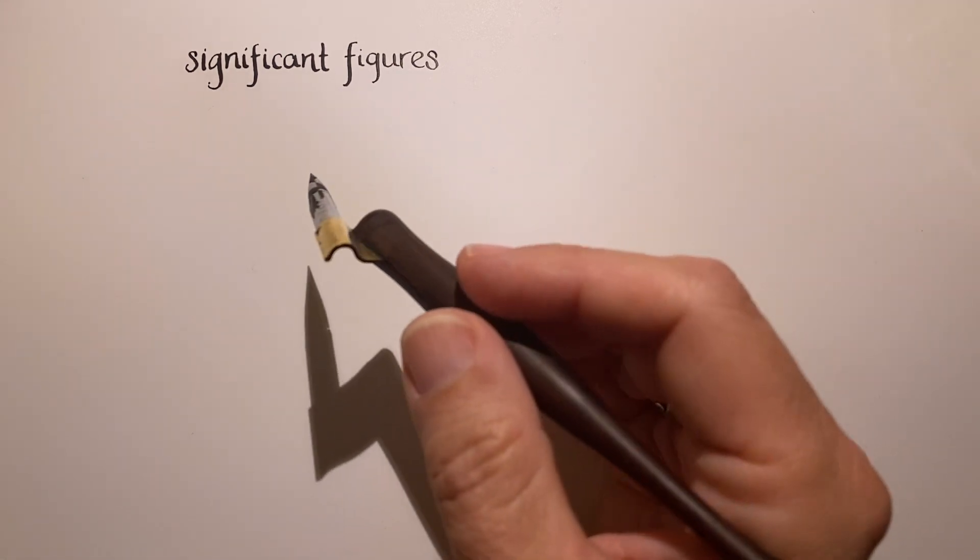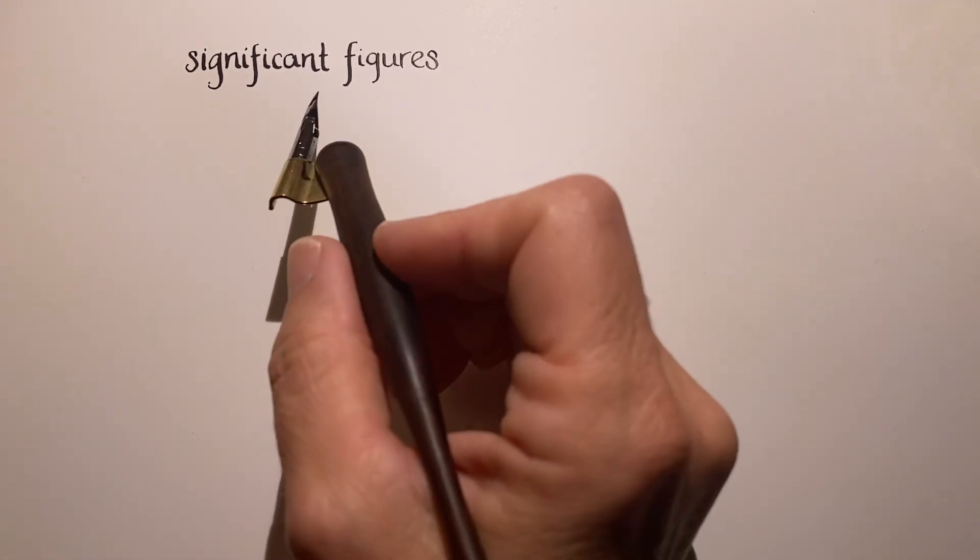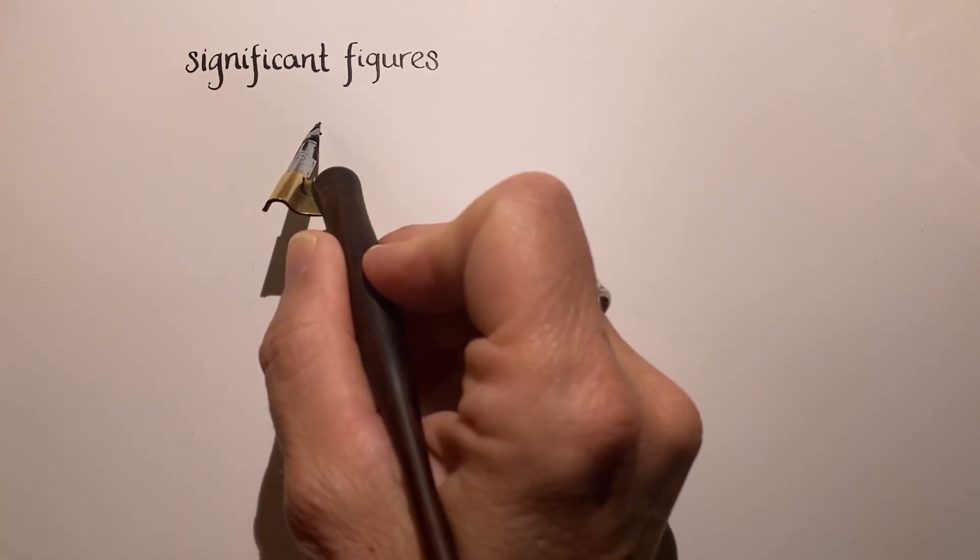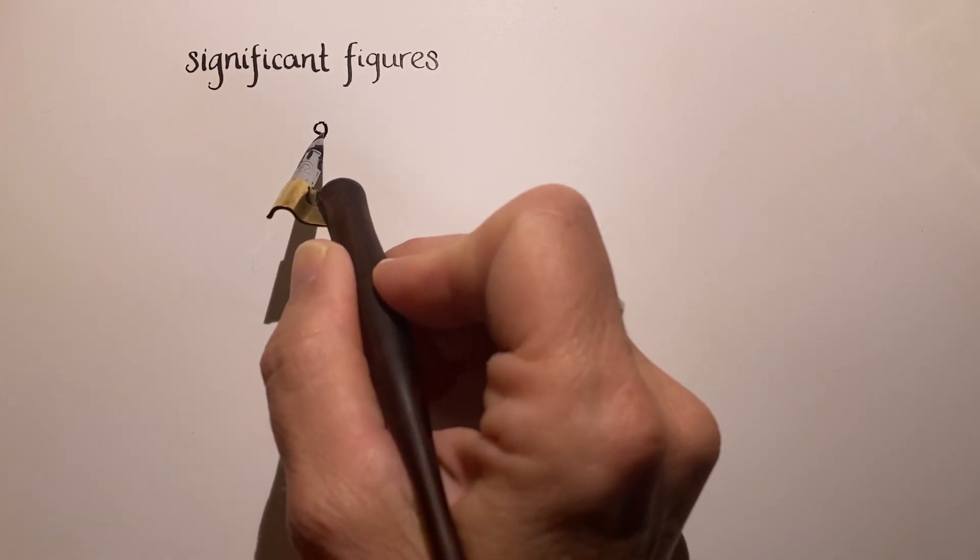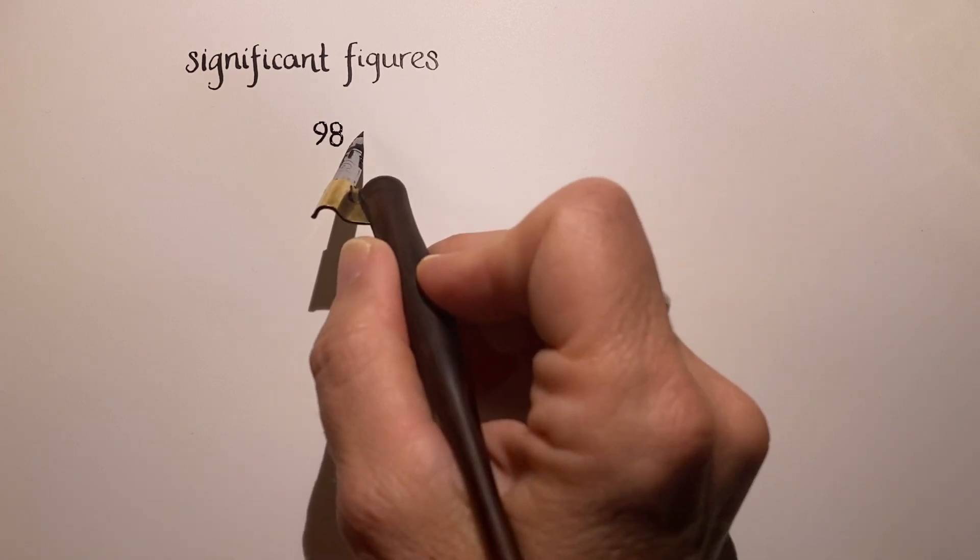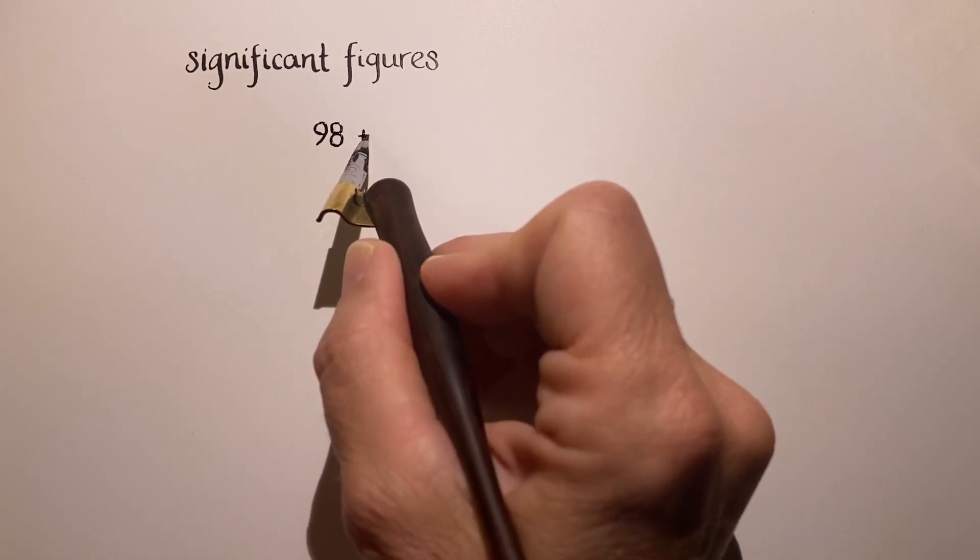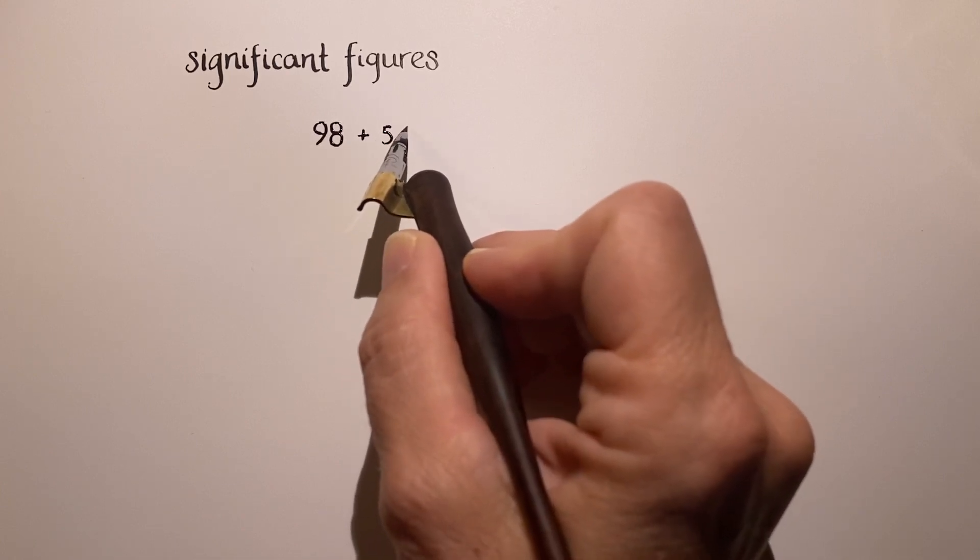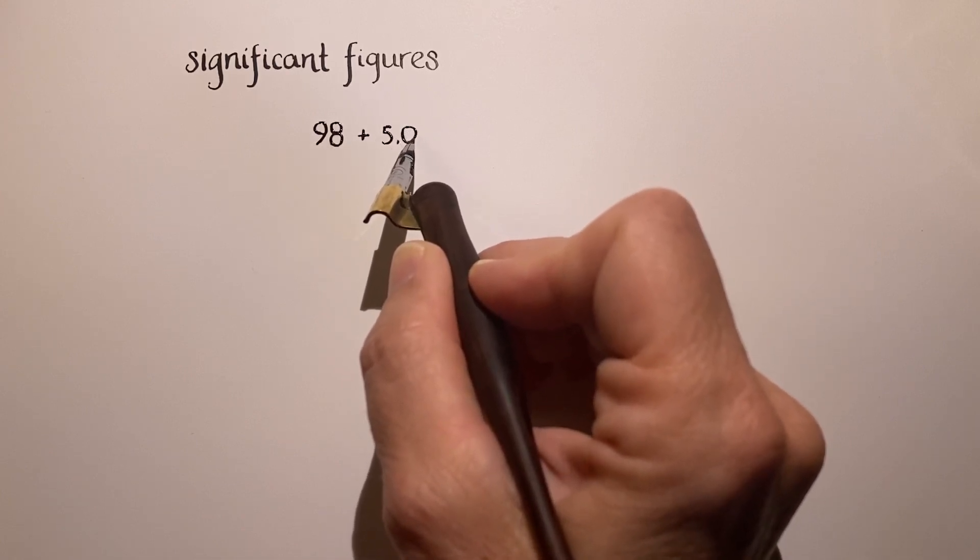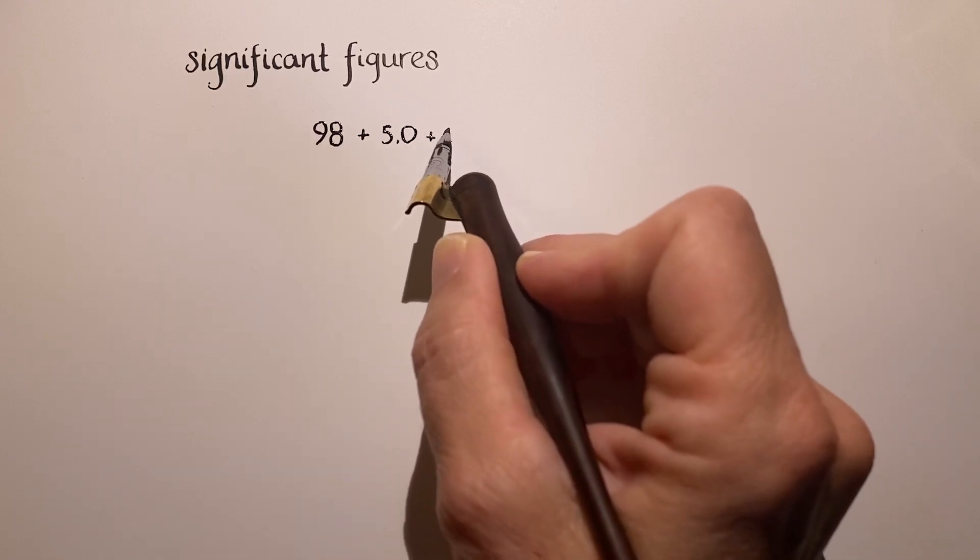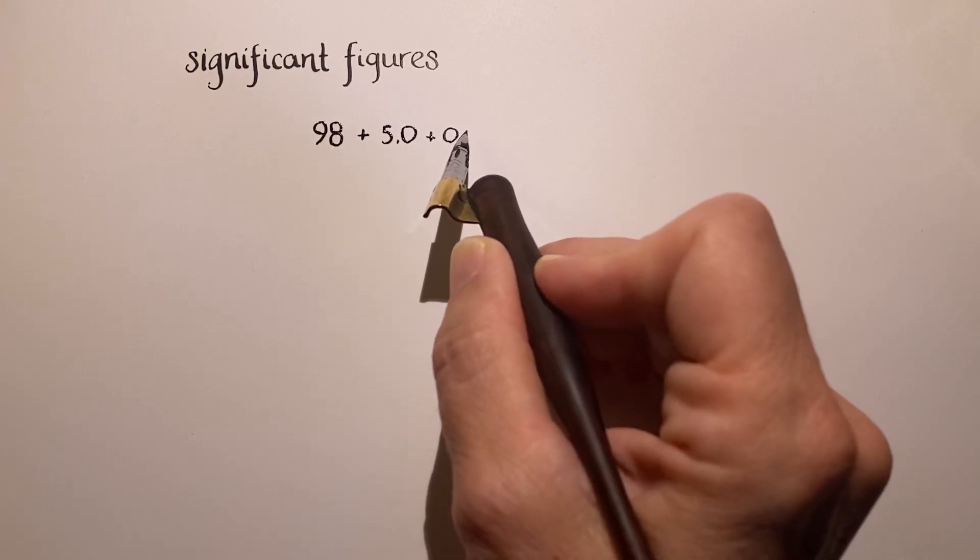So I wanted to do an example that included both addition and subtraction, as well as division, since there are different rules that apply to both of those. In the numerator here, we're going to be adding up five numbers, and each of these has a certain number of significant figures associated with them.